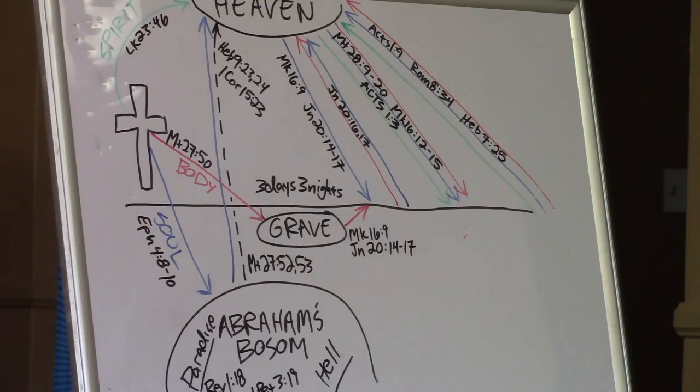John chapter 20, 16 and 17. And this is the dialogue that he has with Mary. He says something really weird to her. This will help you get it. John 20, verse 16 and 17. Jesus saith unto her, Mary, she turned herself and saith unto him, Rabboni, which is to say, Master. Jesus saith unto her, Touch me not, for I am not yet ascended to my Father. But go to my brethren and saith unto them, I ascend unto my Father, your Father, and to my God, and your God.